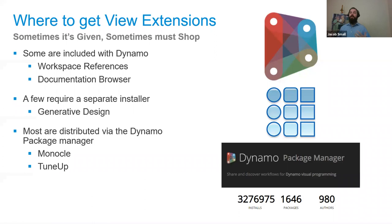Where can you get view extensions? Sometimes they're given, sometimes we must go shopping. Some come with Dynamo when you install it, like the Workspace References view extension and the Documentation Browser. Some require a completely separate installer, like Generative Design for Revit. And others are distributed through the Dynamo Package Manager — like Monocle, TuneUp, and most of the others we're going to cover today.